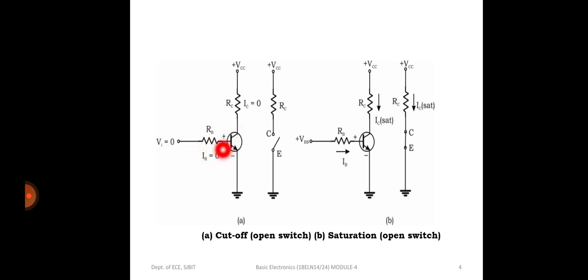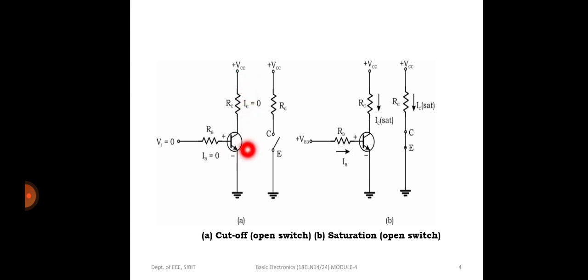When the base-emitter junction is not forward biased, the transistor does not conduct. The base current IB equals zero, and as a result the collector current IC is also equal to zero. Therefore, VCE is in the cutoff region — the transistor acts as an open switch with no current flowing through it.